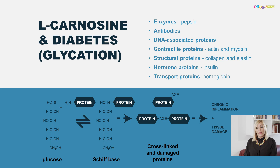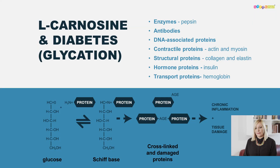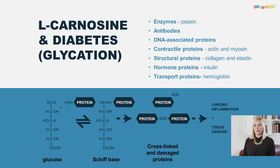We also have hormones as proteins — insulin, for example, regulates glucose uptake in cells — and transport proteins like hemoglobin, which carries oxygen throughout the body. Knowing what proteins do in our body makes us more aware of how important their structure and function are. Our body is mostly made up of proteins, so anything that causes protein damage can have a significant impact on our appearance and health.